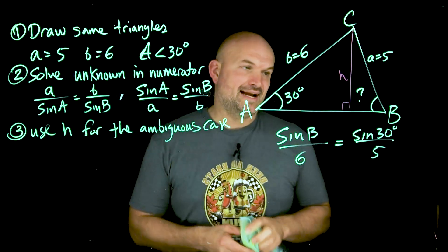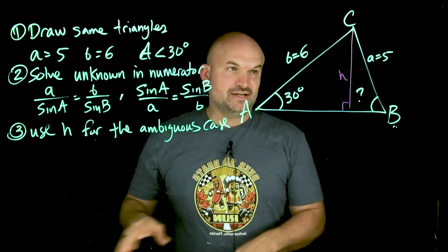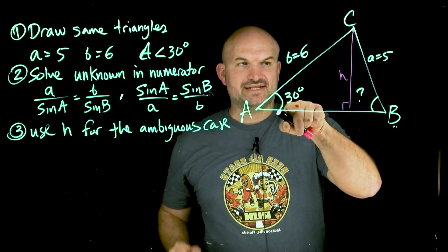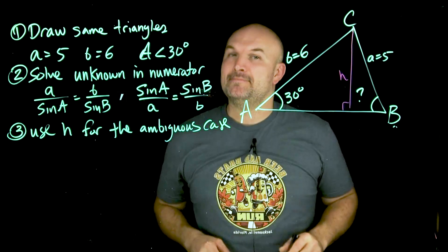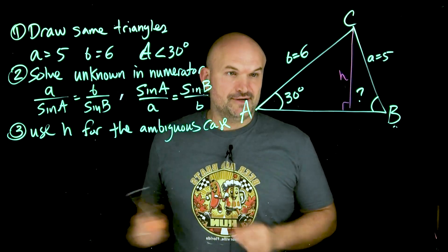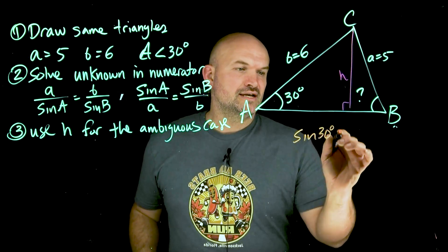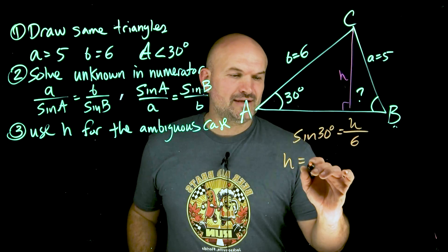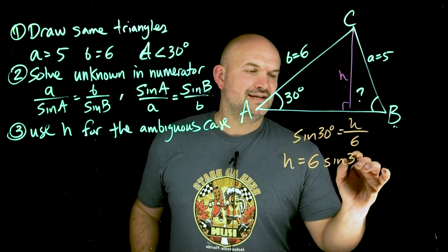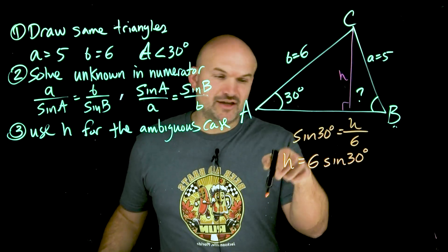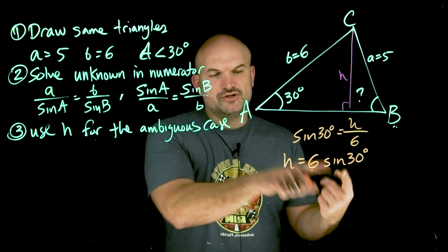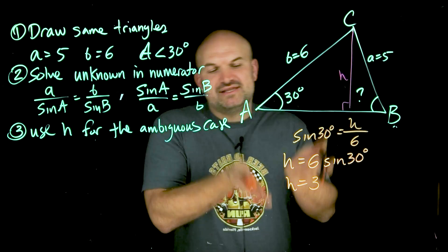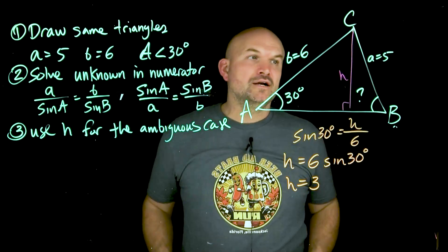What's so important about h and how can it help us understand the ambiguous case? When I created h, it represents the height of the triangle, and I also created a right triangle. I have this angle, the opposite side of that angle, and the hypotenuse. So I can write a relationship: sine of 30 degrees equals h over six. Solving for h, I get h equals six times sine of 30 degrees. Since sine of 30 is one half, one half times six is three, so h equals three.